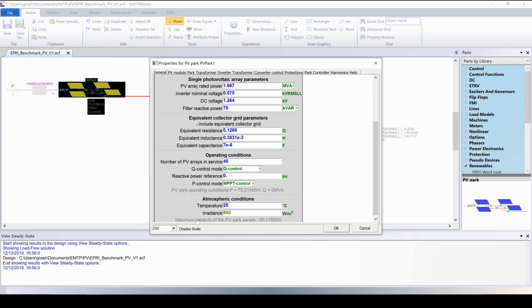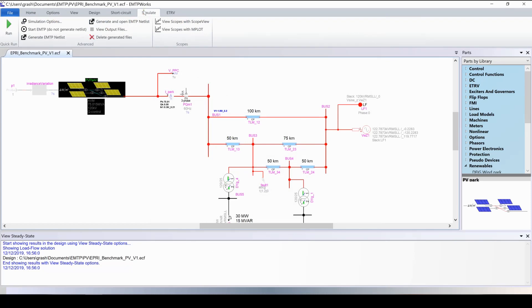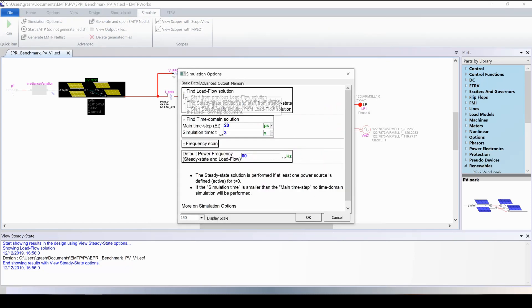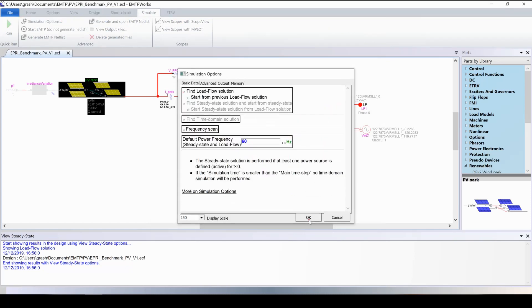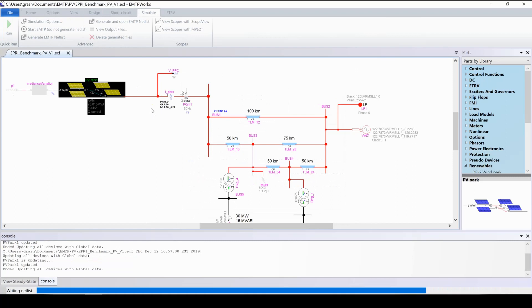We can see that now the MPPT determines the maximum capacity available at 60 MW. Because we change the initial condition, the load flow simulation must be redone. We go to simulate, simulation option, we check find load flow, and run the simulation. We will see that the new power produced by the park with this new value of irradiance will be displayed here.